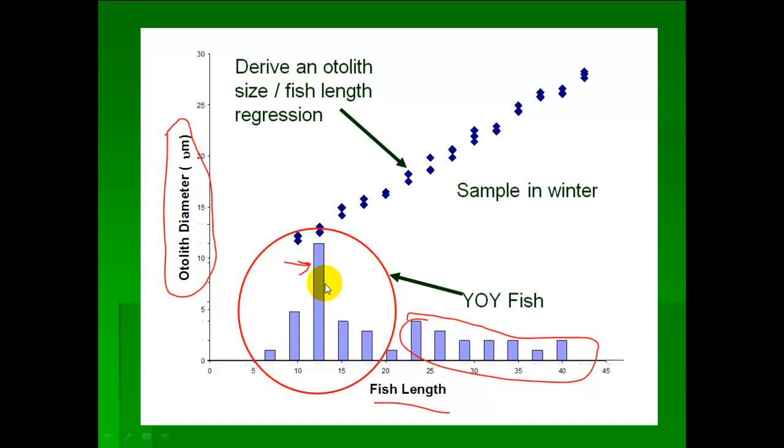But clearly in that first winter, this large bar right here represents that year class, that young of the year fish. Well, if we know that these are the young of the year fish, then we know that this is sort of the average size of an otolith of a young of the year fish.